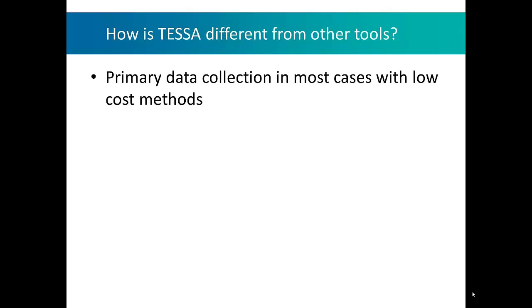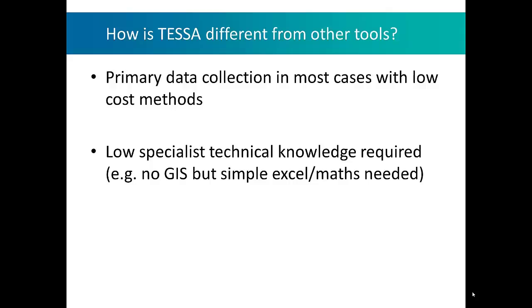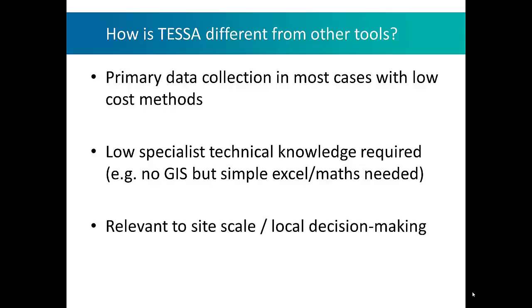You are probably interested to know how this is different from some of the other tools available. Firstly, it focuses very much on primary data collection so that locally relevant data can be gathered and applied. However, it also provides methods if people are unable to collect data in the field, allowing use of existing data and benefits transfer where appropriate. It requires fairly low specialist technical knowledge — no GIS programs — though some basic Excel and mathematical understanding is needed. It is relevant at the site scale, focused on areas such as protected areas, important bird and biodiversity areas, or community conserved areas.